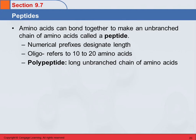Peptides are just short chains of amino acids. We use numerical prefixes to designate the smaller ones, so you can have a dipeptide, which is two amino acids, a tripeptide, a pentapeptide, a decapeptide.